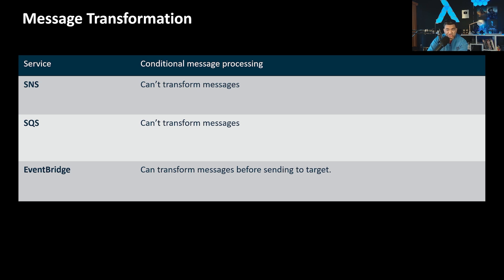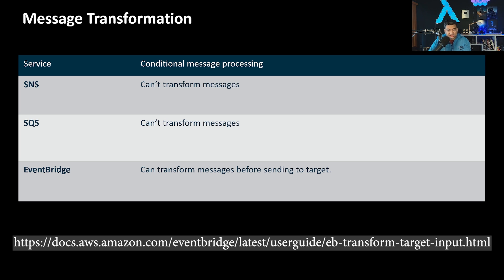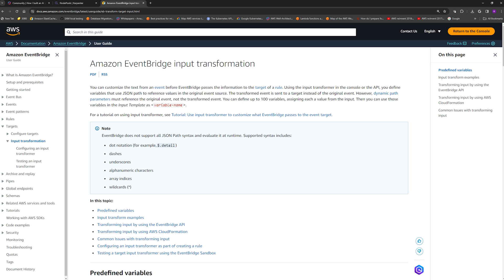Message transformation: SNS cannot transform messages. SQS cannot transform messages. EventBridge can transform messages before sending them to the target - while the message is within EventBridge, it can be transformed.